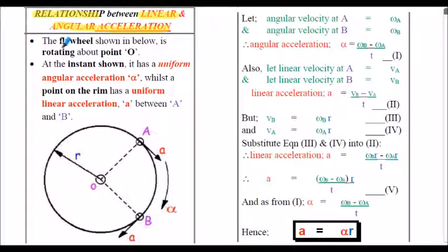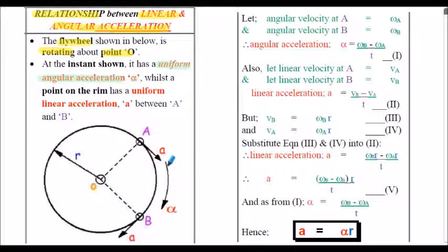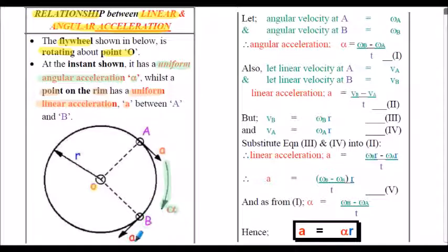Let's consider a rotating disc or flywheel, rotating about point O on the diagram shown here at the instant shown. The flywheel has a uniform angular acceleration alpha shown here, whilst a point on the rim has a uniform linear acceleration a, shown here at point A and at point B.